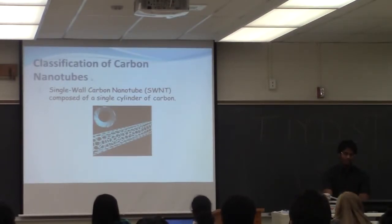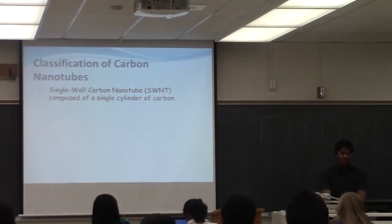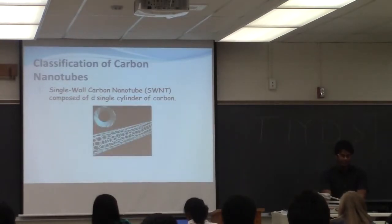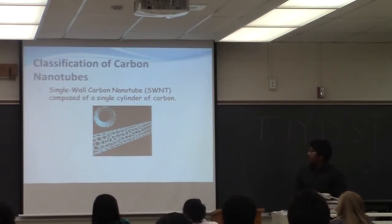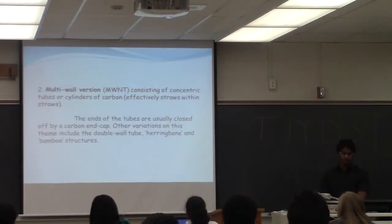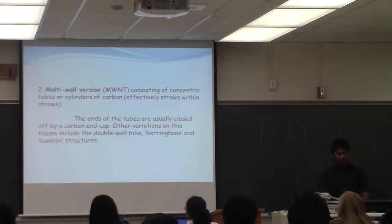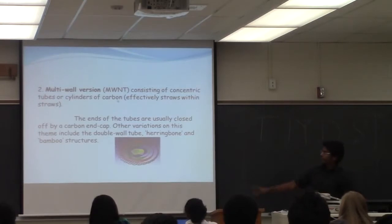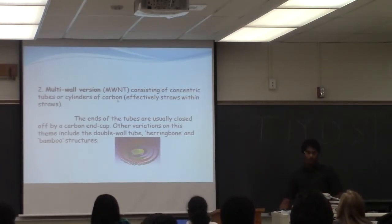Moving to the classification of carbon nanotubes, there are two types. One is called single-wall carbon nanotubes — as the name explains, it is composed of a single cylinder of carbon. The next classification is multi-wall carbon nanotubes, consisting of concentric cylinders of carbon. Imagine a straw within a straw — that is how it looks.